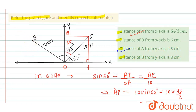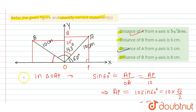Now let's talk about point B. This is the distance of B from the x-axis, and this is the distance of B from the y-axis. The line OB makes an angle of 143° with the x-axis, so this angle will be 180° − 143° = 37°. Therefore this angle is 37°, which means this other angle is 53°.